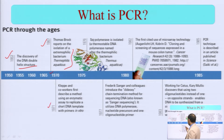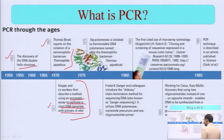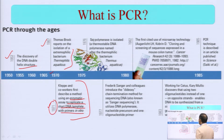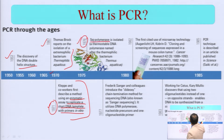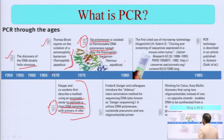In 1971, Lauren Klebs and his co-workers first described the method using an enzymatic assay to replicate a short DNA template with a primer in vitro — that is the beginning of the entire work. Then in 1976, Taq polymerase was actually isolated. It is a thermostable DNA polymerase named after the thermophilic bacterium Thermus aquaticus, and based on this bacterium the name Taq polymerase was given.